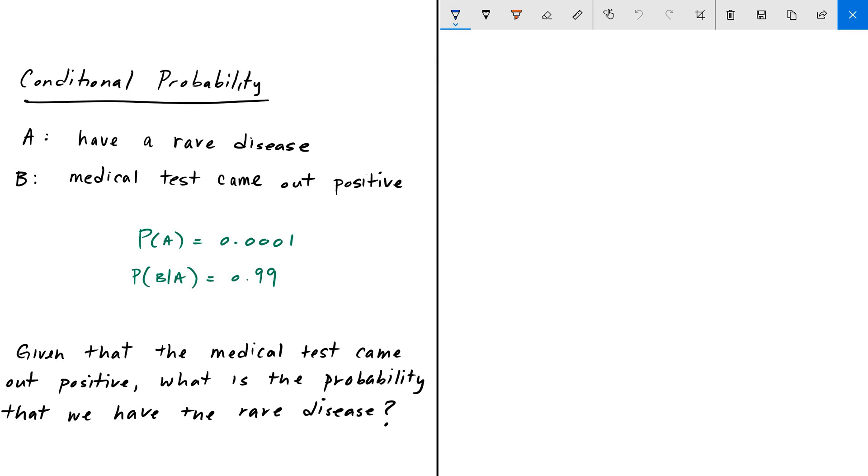To solve this, we use Bayes' theorem. Bayes' theorem tells us that the probability of A given B is equal to the probability of B given A, multiplied by the probability of A, divided by the probability of B.